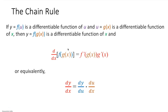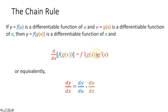The first thing we're going to talk about is the chain rule. That says if y is equal to f of u, a differentiable function of u, and u equals g of x is a differentiable function of x, then y equals f of g of x is a differentiable function of x, and the derivative d/dx of f of g of x is equal to f prime of g of x times g prime of x, or equivalently, dy/dx is equal to dy/du times du/dx.